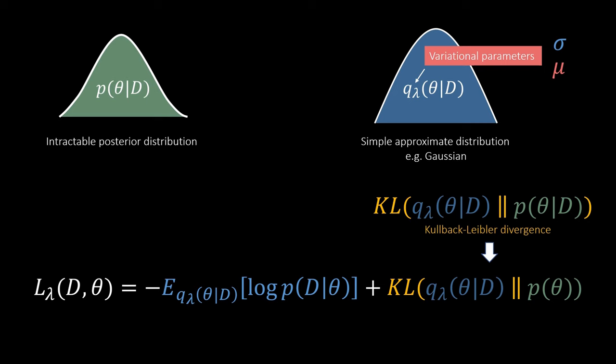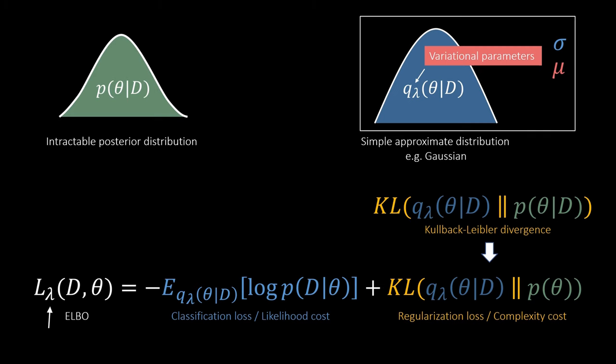Eventually we end up with this loss function which is the so-called evidence lower bound or short ELBO. It consists of two parts. One is the negative log likelihood which makes sure that our predictions are good and the second one is a regularization term that makes sure that our approximate distribution is close to the prior. The important part is that everything here is with respect to the variational parameters which means we tweak these little mu's and sigma's and this way come closer and closer to the real posterior distribution.